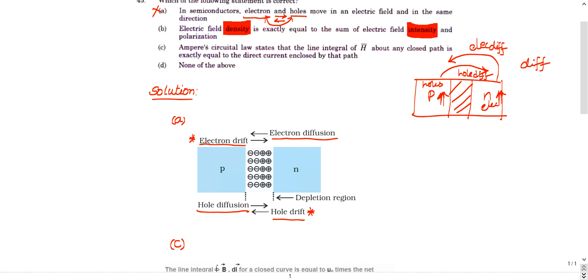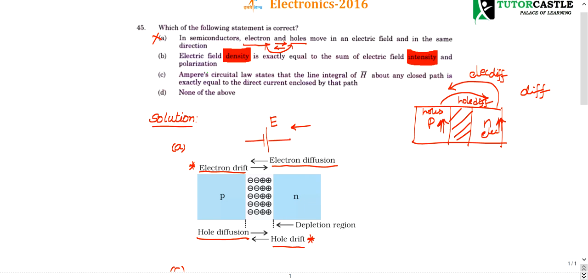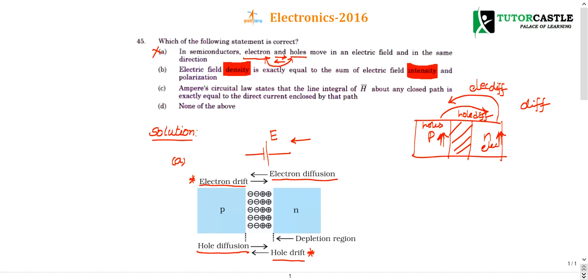Diffusion will be normal operation, drift will be reverse operation. And also electric field is like - here you can see depletion region is formed. Positive indicates higher potential, then negative with lower potential. So this is the electric field form in this direction. You can see electrons direction, holes direction, every time they are opposite. And it is also different from the electric field. So simple way you can conclude is electrons and holes will never move in the same direction of the electric field. So option A is wrong choice.